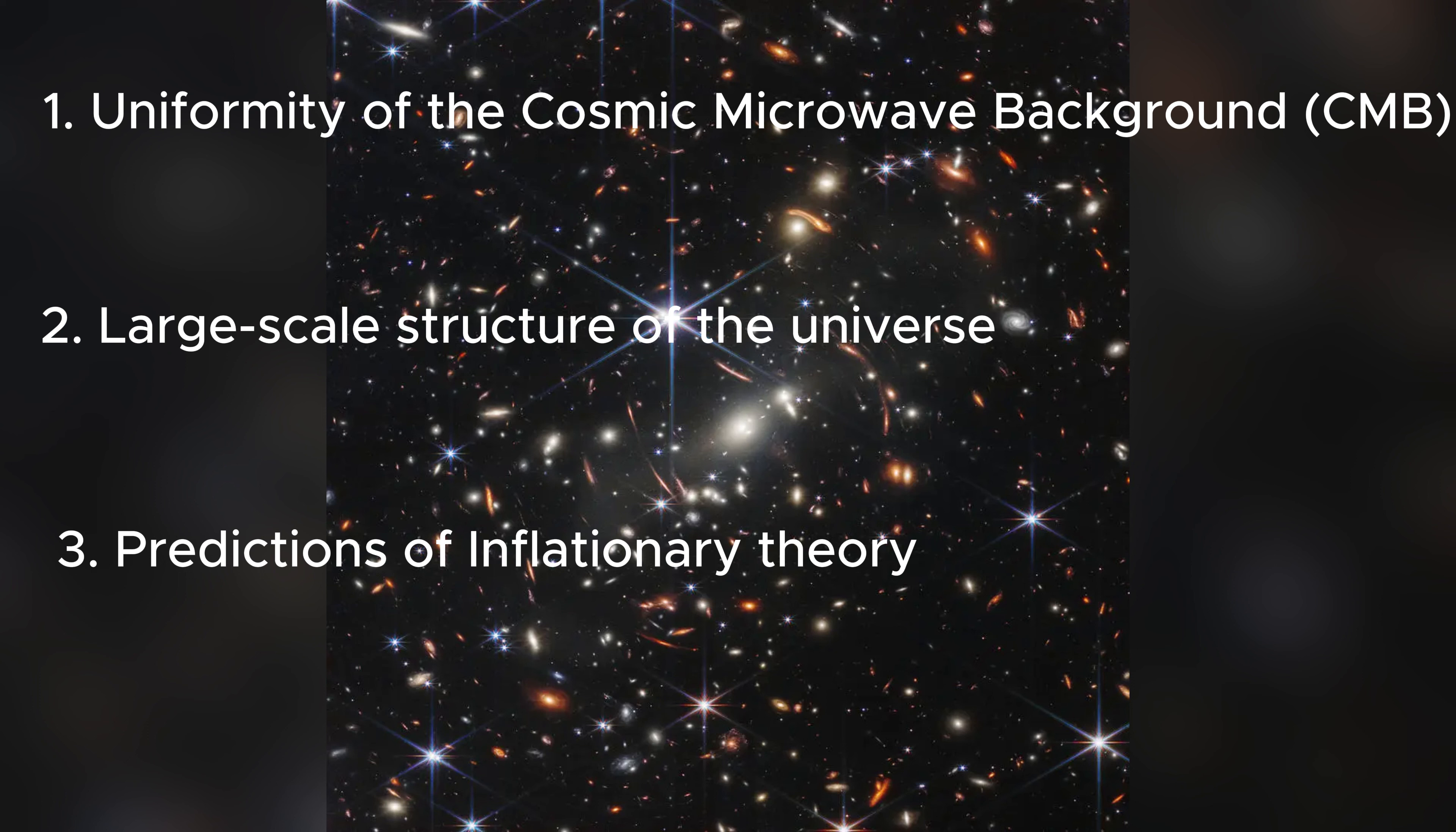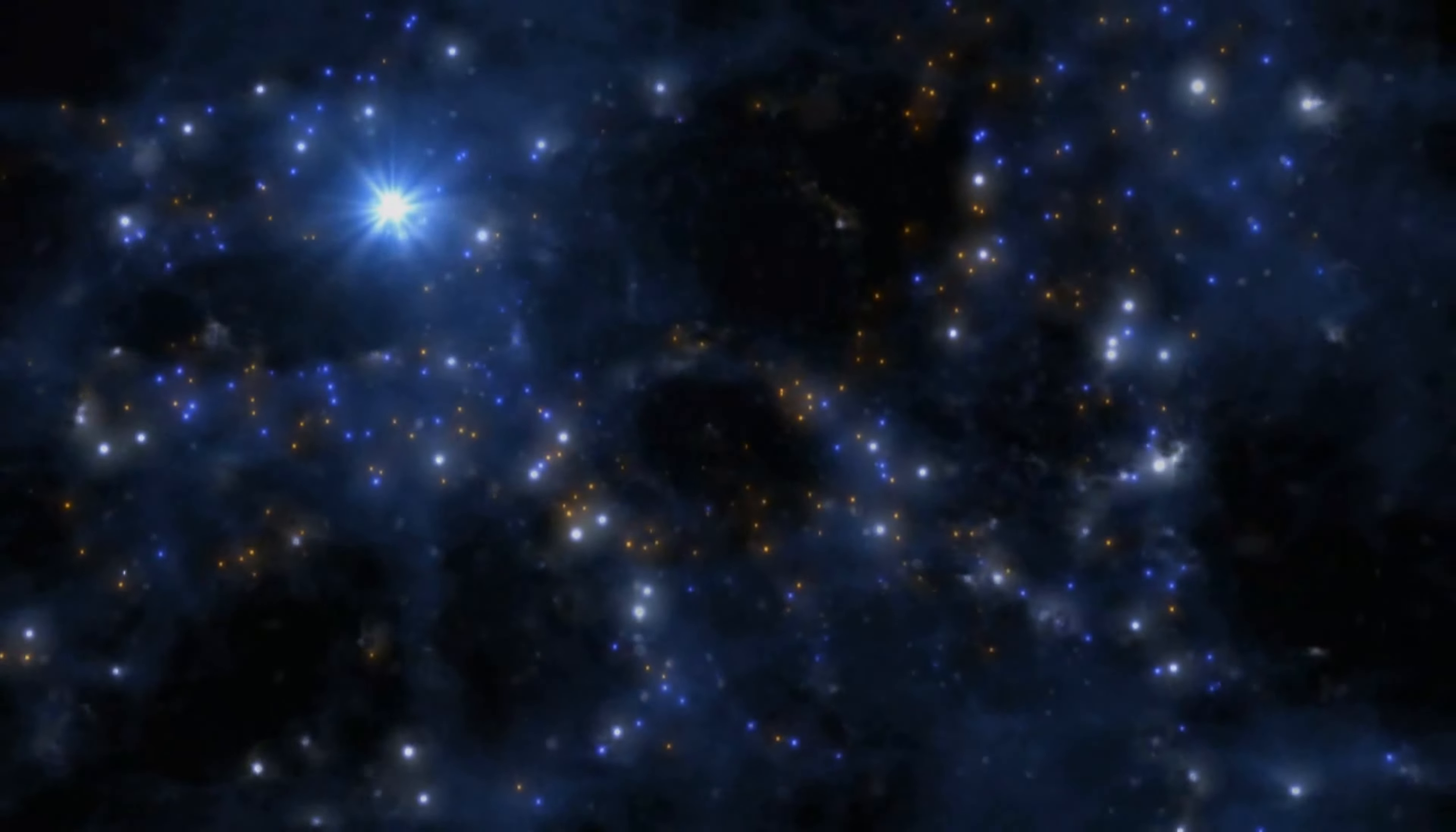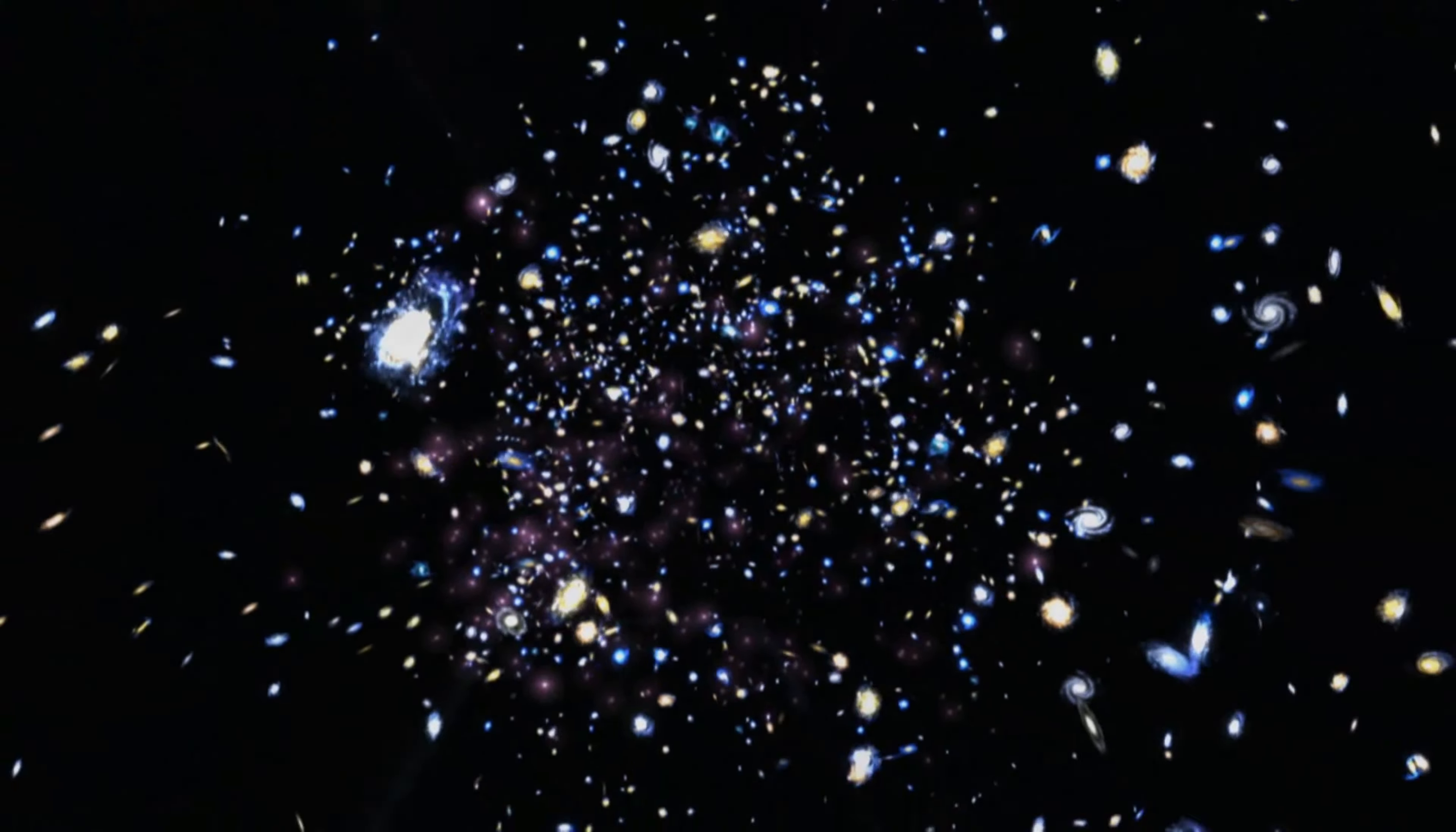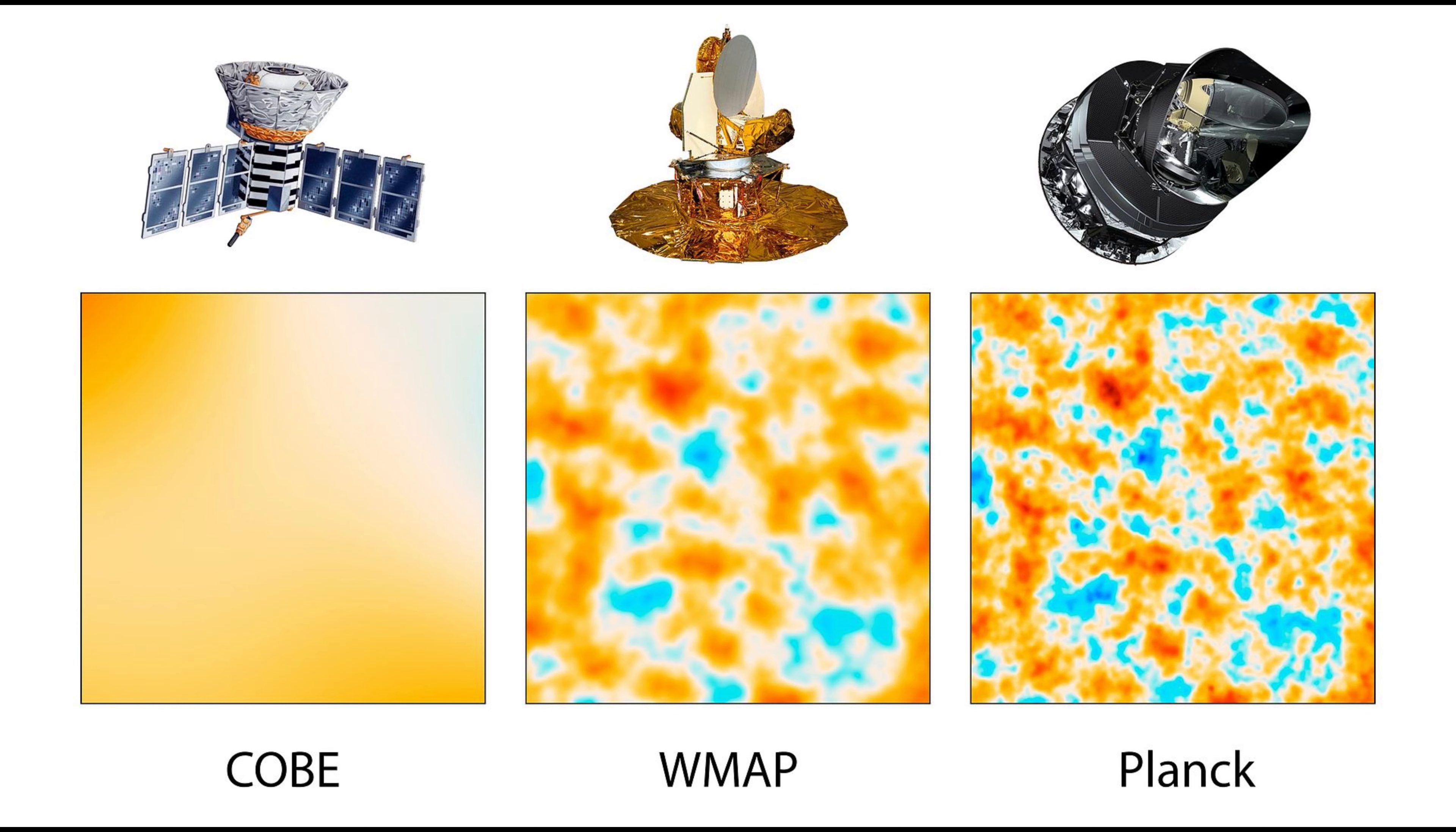The primary evidence supporting the idea of a flat universe comes from the observations of the cosmic microwave background radiation. The cosmic microwave background is the afterglow of the Big Bang, and it provides a snapshot of the universe when it was just 380,000 years old. The measurements taken by WMAP and the Planck satellite show isotropy, which means they look the same no matter which direction you look. This means the average temperature of the CMB radiation is almost the same across the entire sky, regardless of the direction you look.